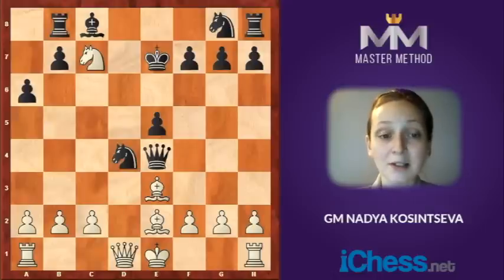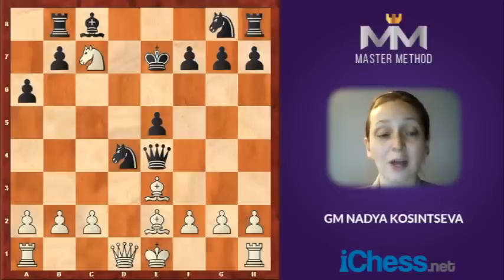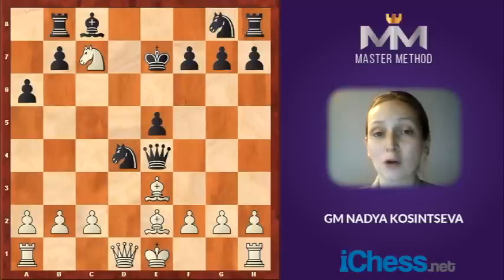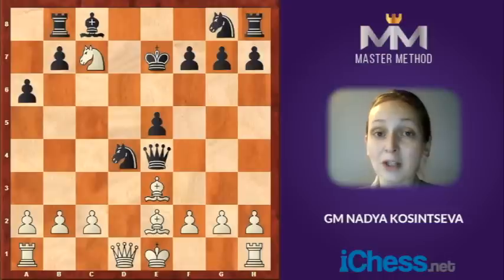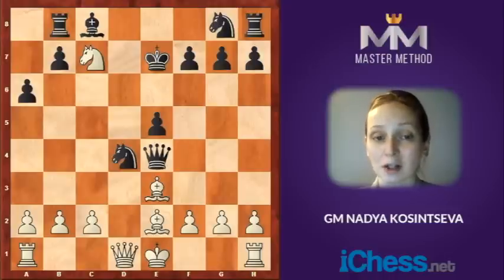By forcing lines I mean checks, captures, and moves with a threat — exactly in this order: checks, captures, and moves with a threat. All these moves limit potential responses of my opponent. That is why it is so important to start your consideration with forcing lines.